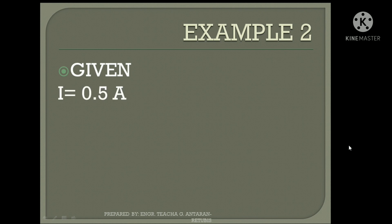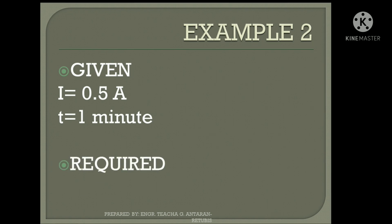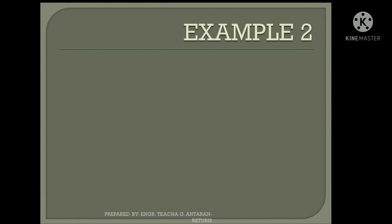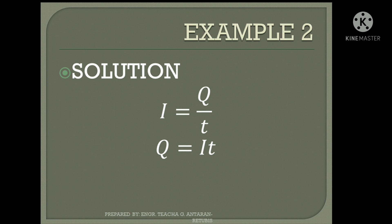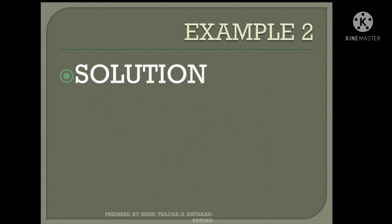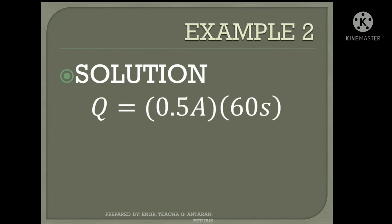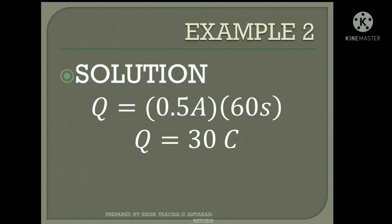We are given the current, which is 0.5 amperes, and the time, which is 1 minute. The required is charge, symbol Q. We use the same formula — current is charge over time — and to solve for charge, we multiply current by time. We convert 1 minute to 60 seconds, then substitute: Q equals 0.5 amperes times 60 seconds, giving an answer of 30 coulombs.